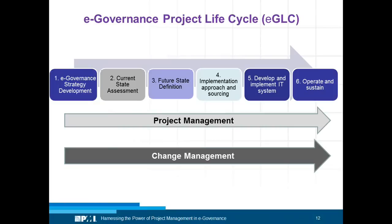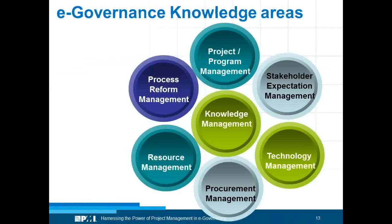This is a typical cycle which we follow in any of the e-government projects. If you look at this cycle, there are around eight knowledge areas — we'll get to the PMBOK nine areas later on. If you categorize the type of knowledge areas required in conceptualizing, designing, implementing, and managing e-government projects, you look at these eight areas. Project or program management itself is one very important area — how do you manage e-government projects which have multiple complexities? We'll talk of these complexities in the subsequent slide.